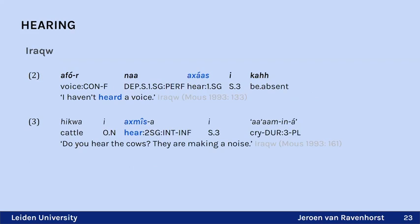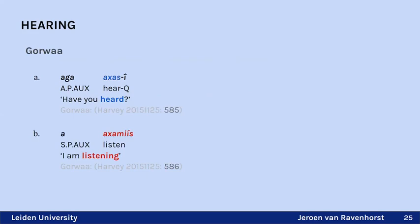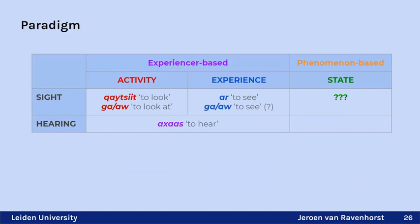In Iraq, both experience readings — 'I haven't heard a voice,' 'do you hear the cows?' — and activity readings are possible from the same verb. In Gorwa, the experience reading uses 'ahas' and the activity reading uses the durative infix form. The base meaning of the verb is 'to hear,' and the activity reading is derived via morphology, so it will be treated as a generic experience-based verb. No phenomenon-based verbs are found for hearing.